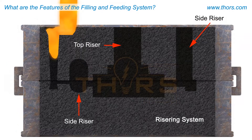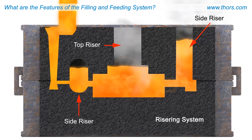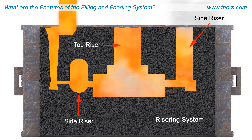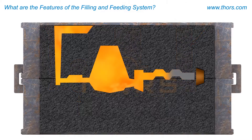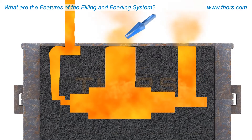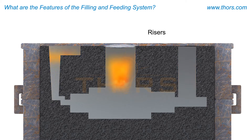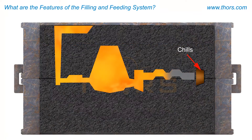The feeding system ensures there is a continuous supply of molten metal to the casting during solidification, to compensate for shrinkage. Additionally, the feeding system is instrumental in promoting controlled solidification of castings. The feeding system may also include riser sleeves and hot toppings. Risers are generally placed at or near the thicker sections of the casting that solidify last. Chills are metal inserts used to manipulate the thermal gradient to promote directional solidification of the casting.